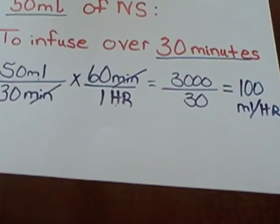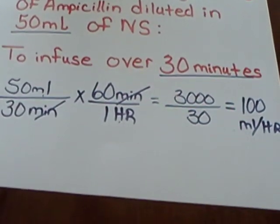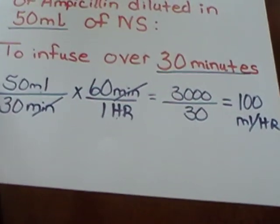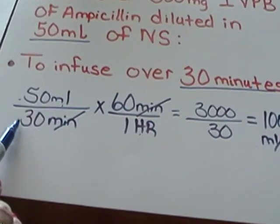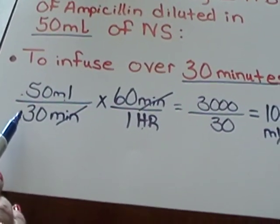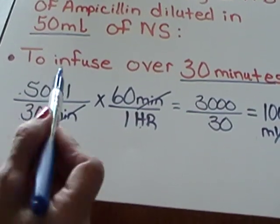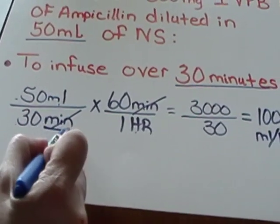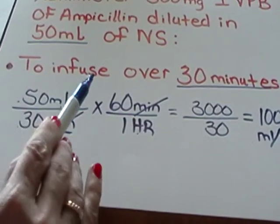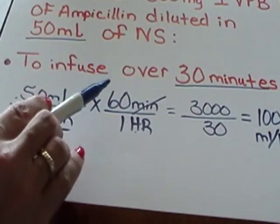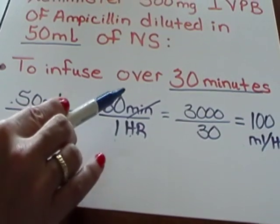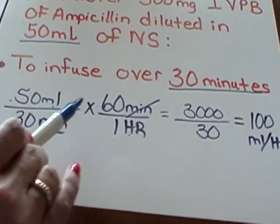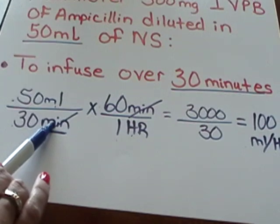Once again, with this type of problem, we always put our volume or our amount to be delivered milliliters on the top of our numerator. Our time that we infuse it over is the denominator, and in this case it's minutes. When we are working with minutes, we have to put in an extra step and say there are 60 minutes in one hour. Always remember that your minutes need to go on top because they have to be able to cancel each other out.